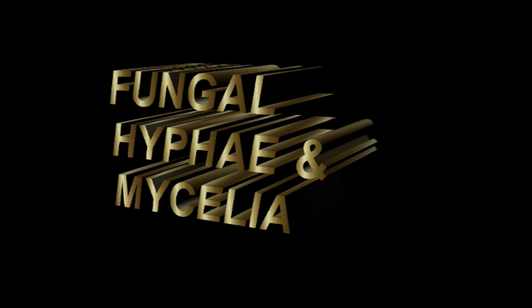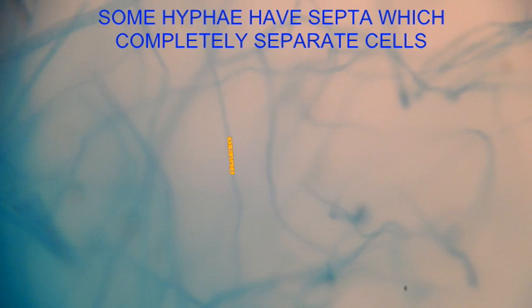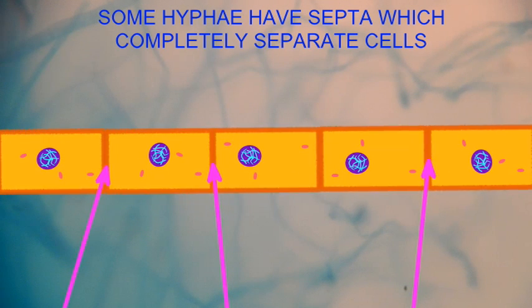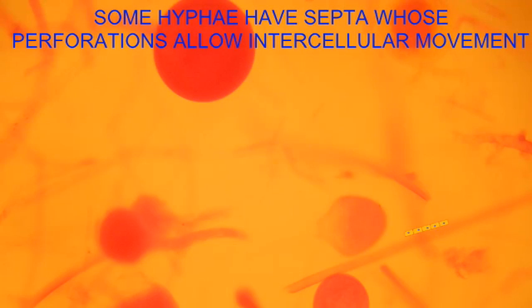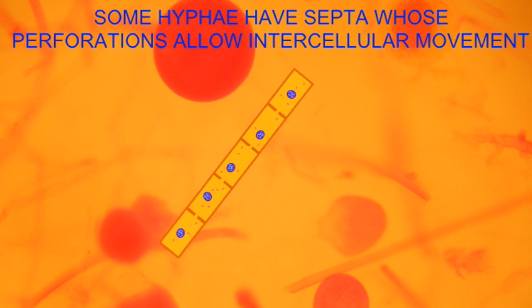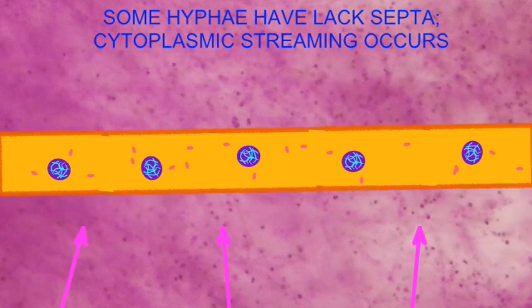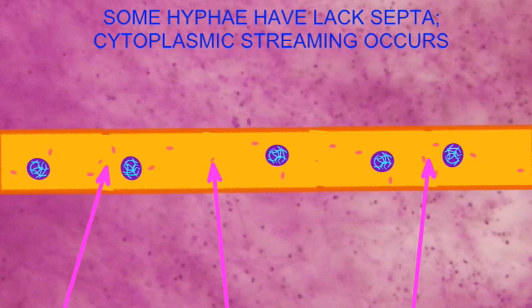All fungi, except for the unicellular yeasts, grow through microscopic strands known as hyphae. The cells of these strands are surrounded by a cell wall of chitin and may be divided from each other, in some hyphae, by septa. In many fungi, these septa are perforate and allow the transport of materials and even cellular organelles between cells. In some fungi, the hyphae do not form septa and materials can transport throughout the organism through cytoplasmic streaming.